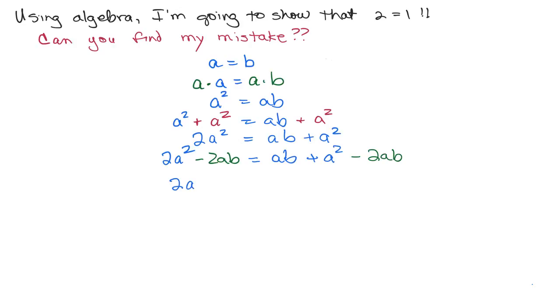And then I'm just going to simplify the right-hand side by combining like terms. We have 2A squared minus 2AB on the left. On the right-hand side, I have an A squared, and then I have 1AB minus 2AB, that's just going to be minus AB.